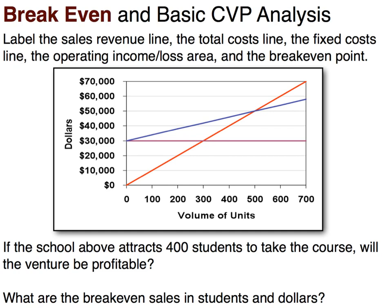The first thing we'll label is the red line. The red line has zero dollars if there's zero activity, and it keeps climbing as our activity increases. This is called our revenue line.